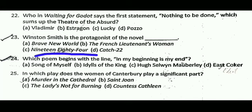Next question: which poem begins with the line, 'In my beginning is my end'? The correct answer is D, that is East Coker by T.S. Eliot.